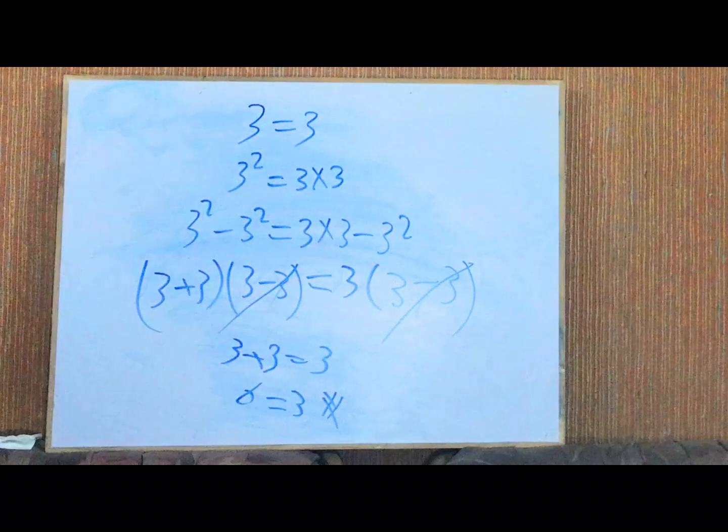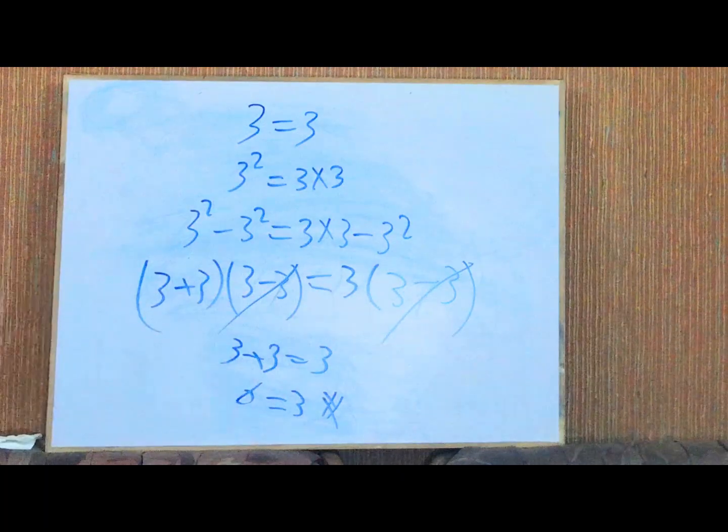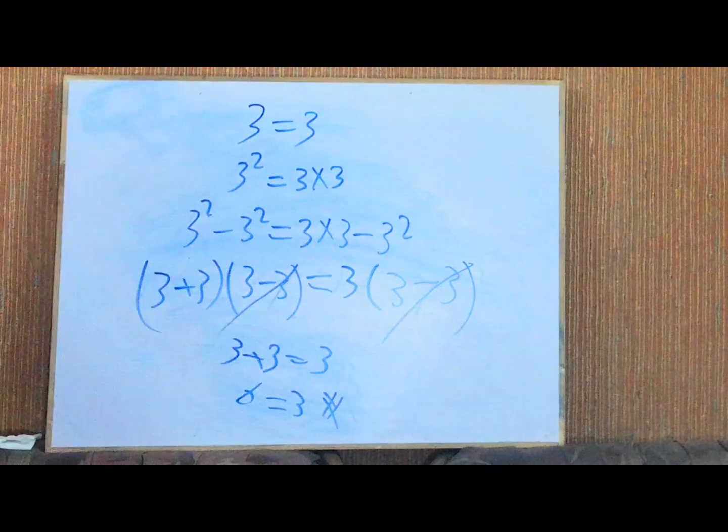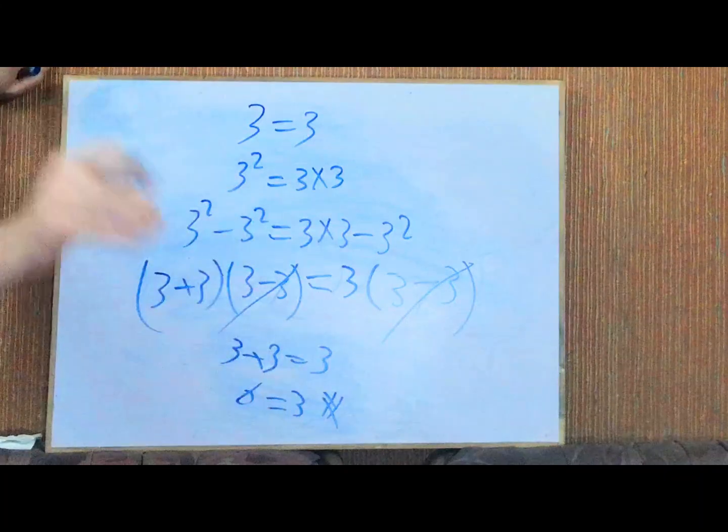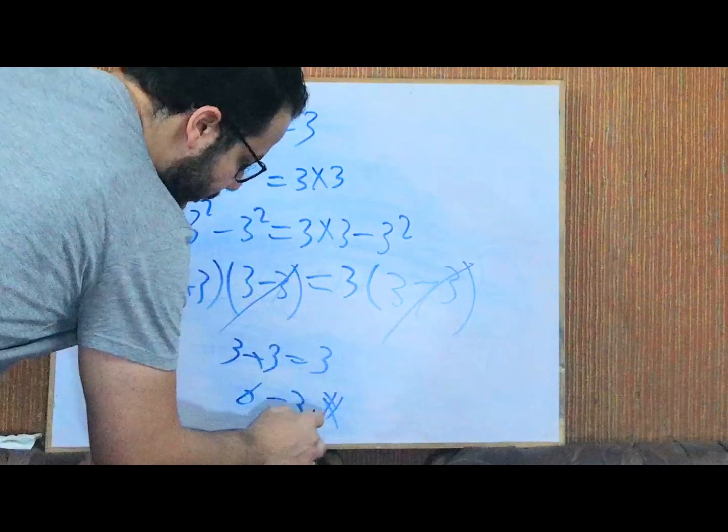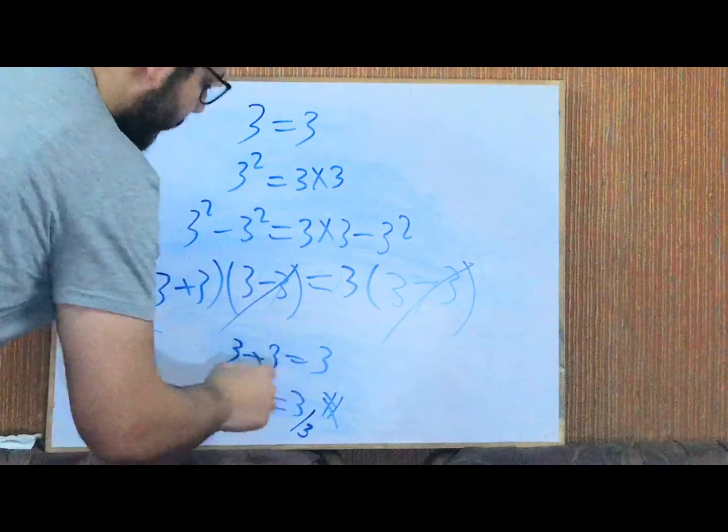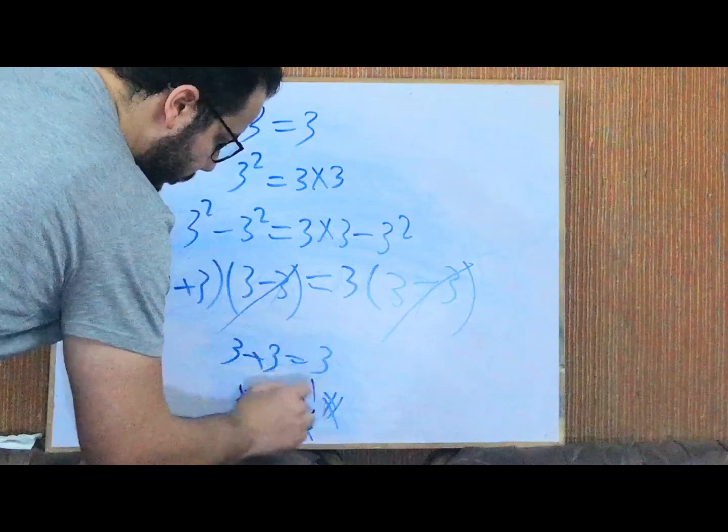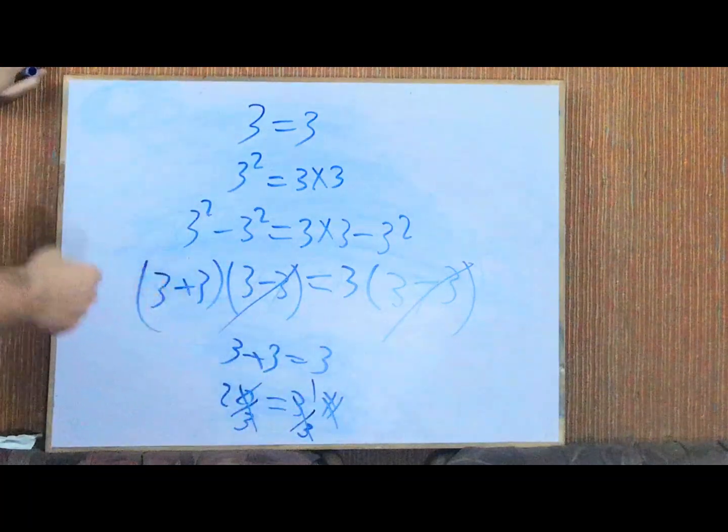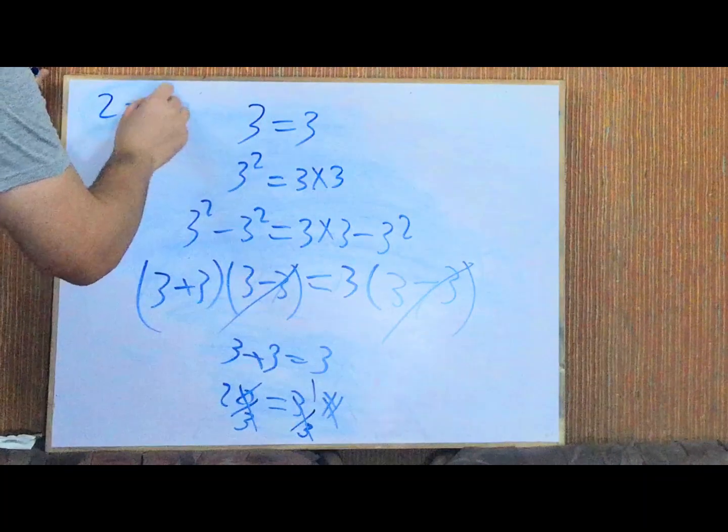Watch this, be careful. 3 over 3 equals 1, and 6 over 3 equals 2. That means at the end, 2 equals 1.